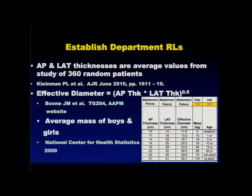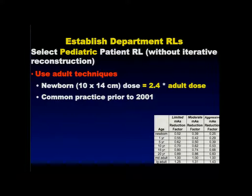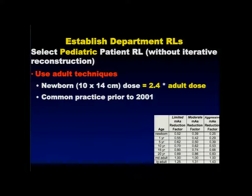The table also includes mass from a National Center for Health Statistics publication. I'm trying to give people whatever they're most comfortable working with — the lateral dimension, weight, or age. For a newborn: 10 cm AP, 14 cm lateral, effective diameter 11.6 cm, and 4 kg weight. If you don't adjust techniques for kids — which is essentially what everybody did prior to 2001 — the newborn abdominal dose is 2.6 times higher than the adult dose, reflecting the 2.6-fold difference between a 10 cm and 32 cm phantom.